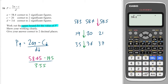So I'll do 58.45 minus 19.5 — I'll just press equals and then divide by 3.55, and that gives me 10.97. It wants it to two decimal places, so the answer is 10.97.